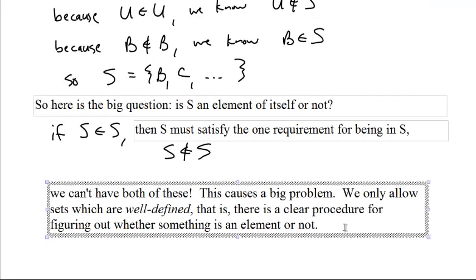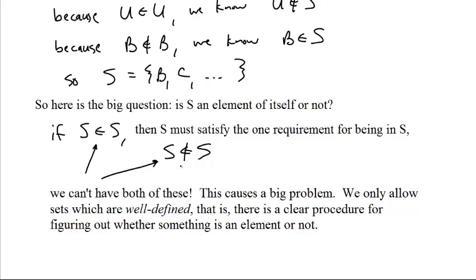And if you think about it, we can't have both of these at the same time. You can't be in something and not in it at the exact same time. We only allow sets which are well-defined. And that means there has to be a clear procedure for figuring out whether or not something is an element or not. We don't know whether S is or isn't in S. That causes problems.